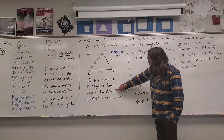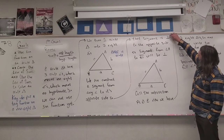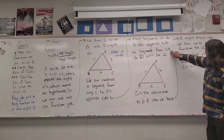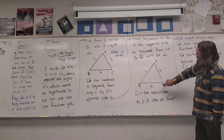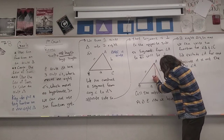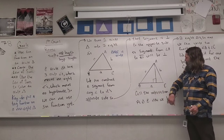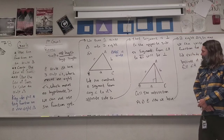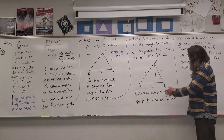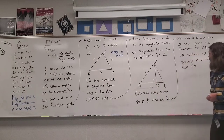We can construct a segment from any angle to its opposite side so that the segment is perpendicular to that opposite side — basically, we can make a right angle from any angle to its opposite side. I'm going to create a segment from angle A to side BC so that it will be perpendicular to side BC. If I drop down a segment like this, I can build one that is perpendicular. We'll call the intersection point D, and now we have two right triangles.